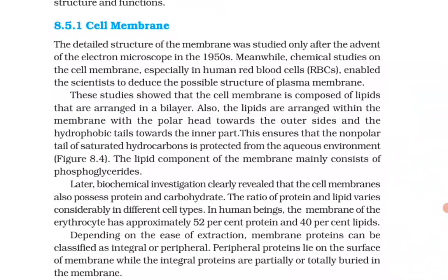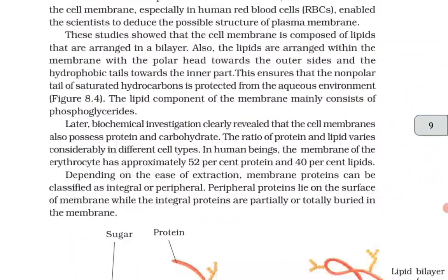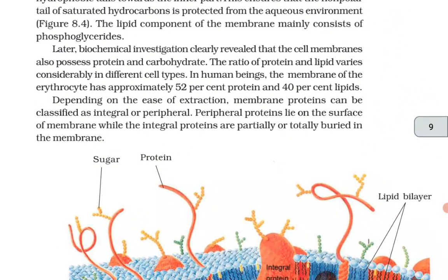This ensures that the non-polar tail of saturated hydrocarbons is protected from the aqueous environment. The lipid component of the membrane mainly consists of phosphoglycerides. Biochemical investigations revealed that cell membranes also possess proteins and carbohydrates. The ratio of protein and lipid varies considerably in different cell types. In human beings, the membrane of the erythrocyte has approximately 52 percent protein and 40 percent lipids.